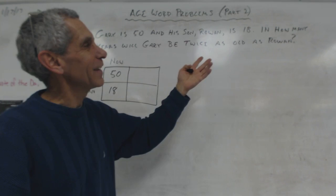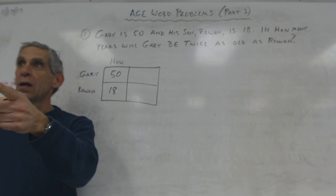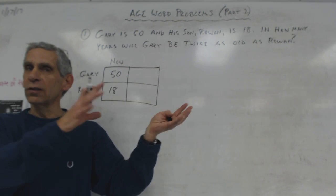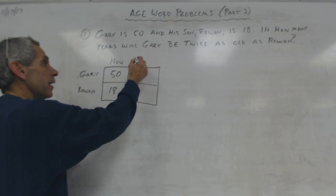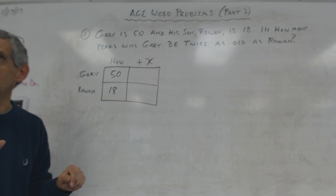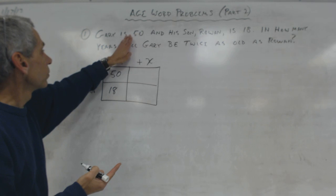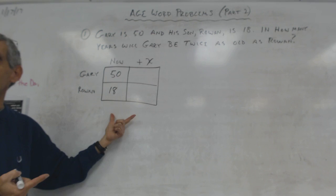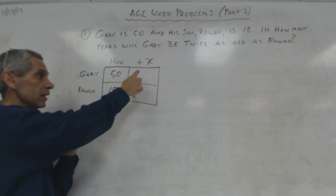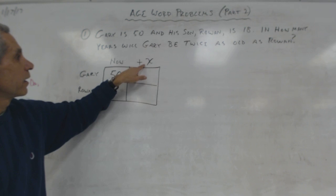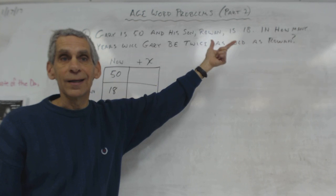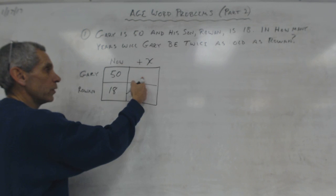Then it says in how many years. What would I put for here? Plus x, right? If it was the past it would be minus x, but if it's the future it's plus x. They're asking me to find x. Notice I do not read past 'in how many years' until I have finished filling out my chart. I don't want to put two times everything inside here yet.